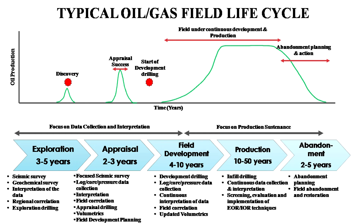Towards the end, because petroleum is a naturally occurring substance and is not replenishable, at one point we will exhaust the reservoir of the oil and gas it had. At that point, the field goes into natural decline and we need to plan to abandon the field safely so that there is no environmental accident. That is the last phase — called the abandonment phase.